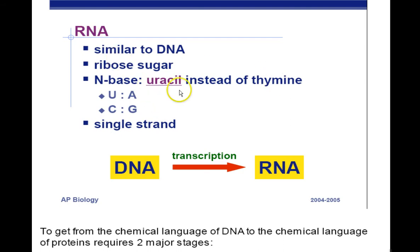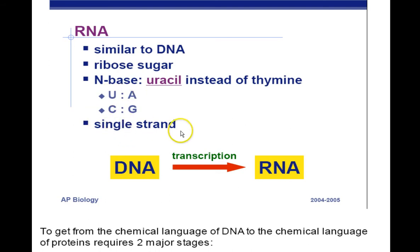Anytime you deal with uracil, you know you're not dealing with DNA. So A normally pairs up with T. However, since there are no T's in our RNA, we replace those with U's, and that's a big difference. Also, RNA is single-stranded — it's only one strand. DNA is double-stranded. The process of DNA making RNA is called transcription.